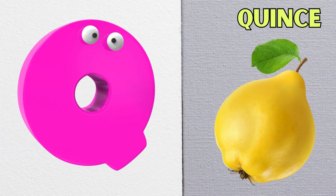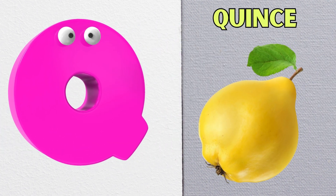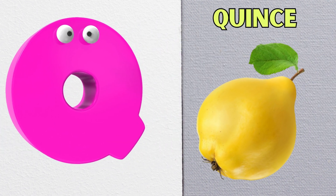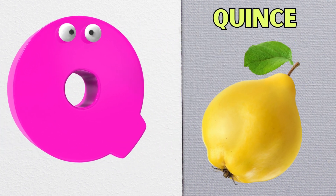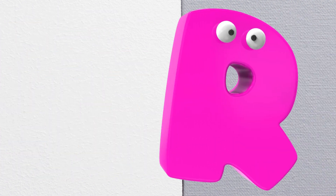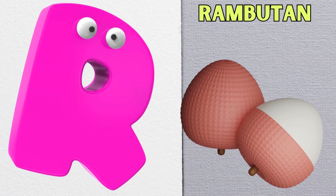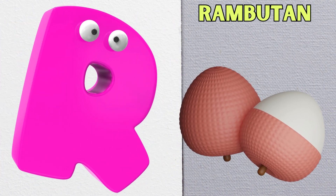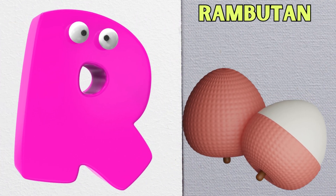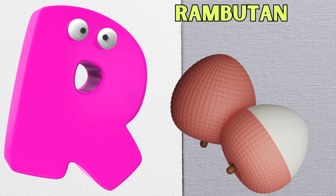Q is for quince, qu-qu-quince. R is for rambutan, r-r-r-rambutan.